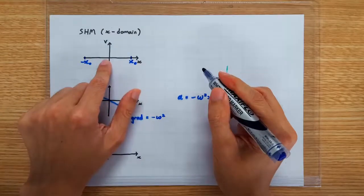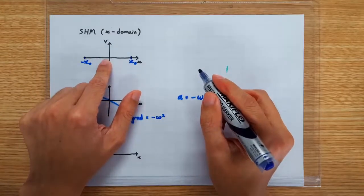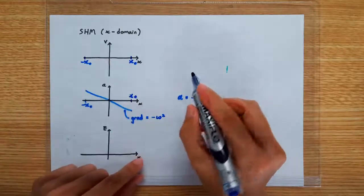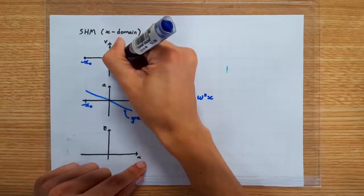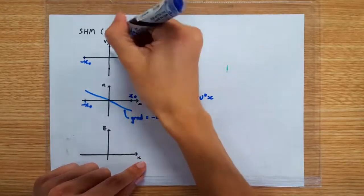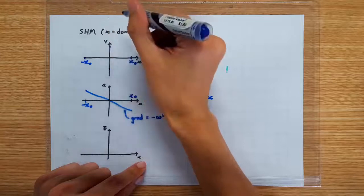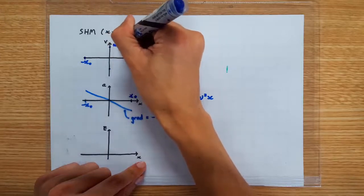At the equilibrium position, the oscillation is at its maximum speed. So now we have two more points on the VX graph and the maximum velocity we know is omega X0.